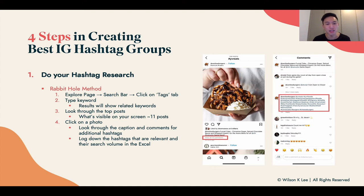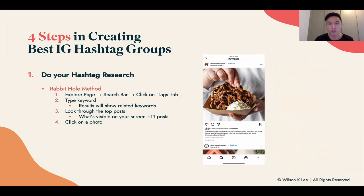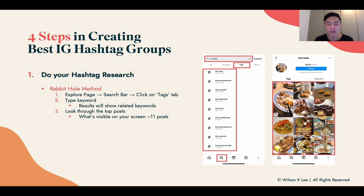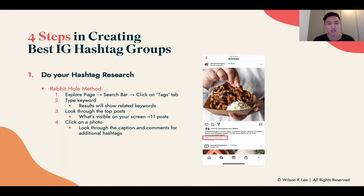Log down the hashtags that are most relevant to you and also their search volume. To find the search volume, just go back to the search bar — every time you put in a hashtag, you can see the search volume listed beneath it. For example, 827,000 posts for YVR eats, 5.8k posts for YVR eats and treats, 762 posts for YVR 604, and 90 posts for YVR eats squad. Log these onto the Excel sheet — the link is in the resources below, so click it and download it.